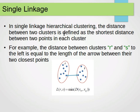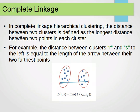In the single linkage method, the distance between two clusters is defined as the shortest distance between two points in each cluster. If we have two clusters r and s, we find the two closest points across those clusters, and that distance is the cluster distance. As you can see in the diagram, the distance between clusters r and s is equal to the length of the arrow between their two closest points — the minimum distance between a point from one cluster and a point from the other.